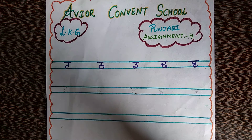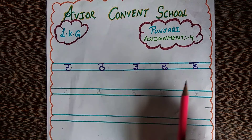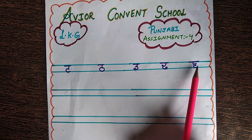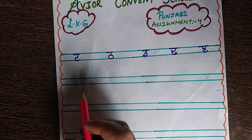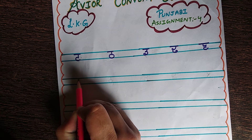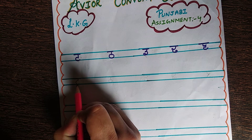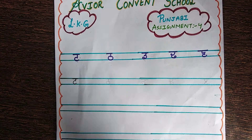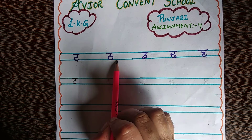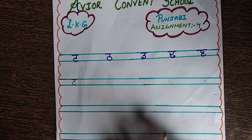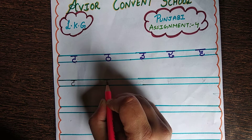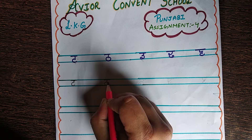Dear students, now I will tell you the formation of these alphabets. So let us start. First of all, make a sleeping line. Then standing line, then standing line, then round.